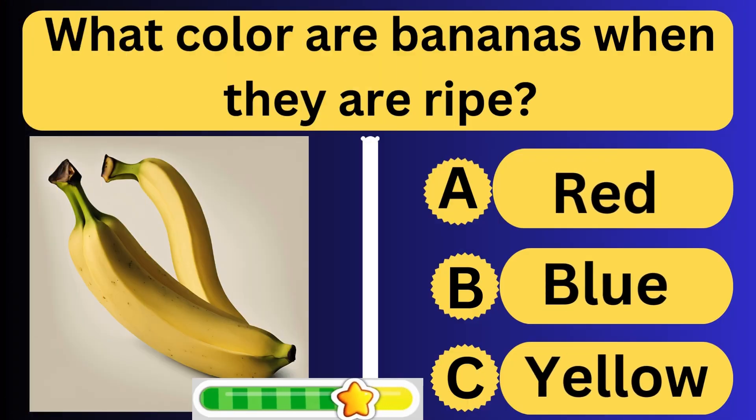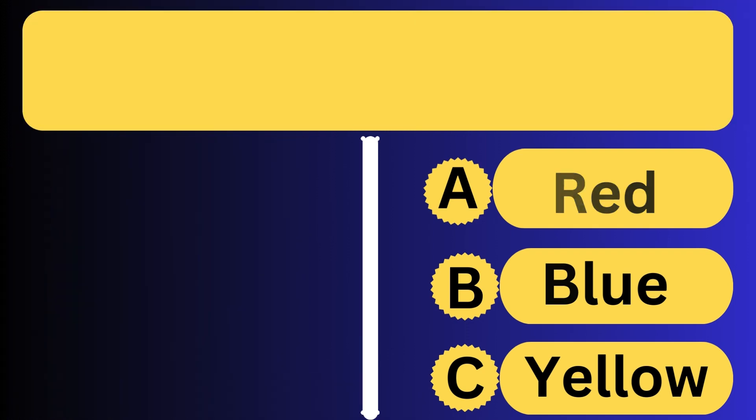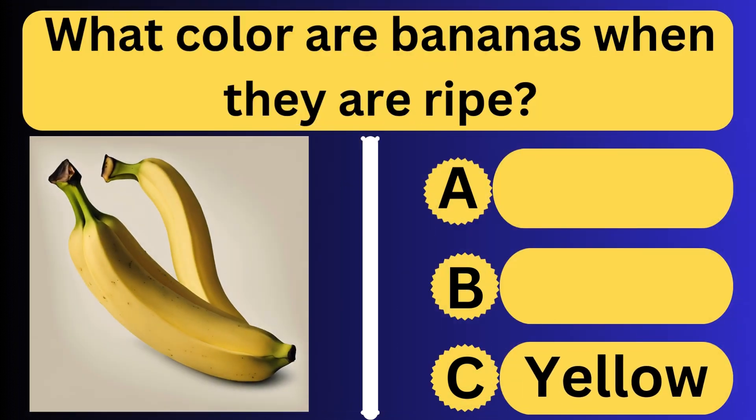What color are bananas when they are ripe? They become yellow when they ripen.